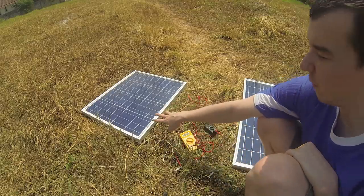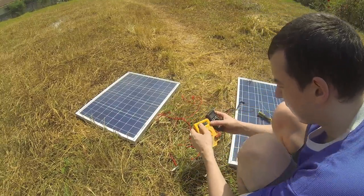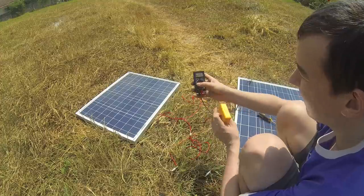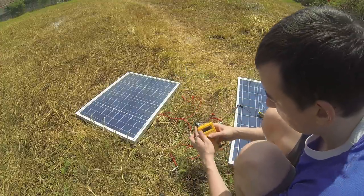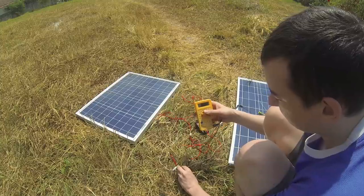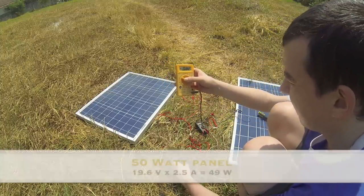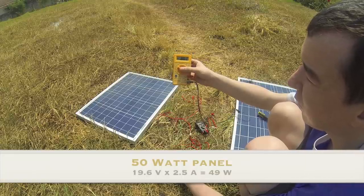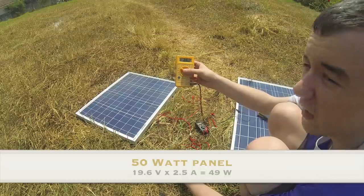So let's take a look at the output of this 50 watt panel here. Oh no, my multimeter is melting in the sun. Anyway, so voltage of 19.6 volts and the amps, let's connect that, 2.5, so around 20 volts, 2.5 amps, it's pretty close to spec.